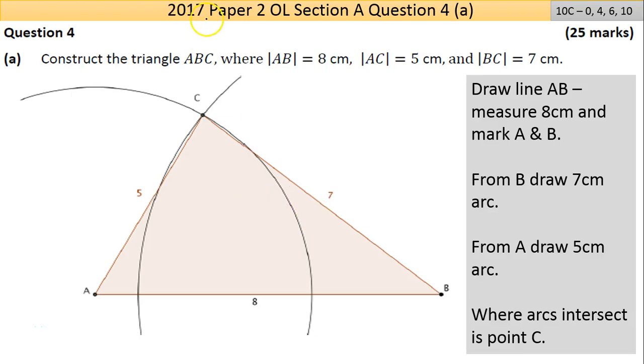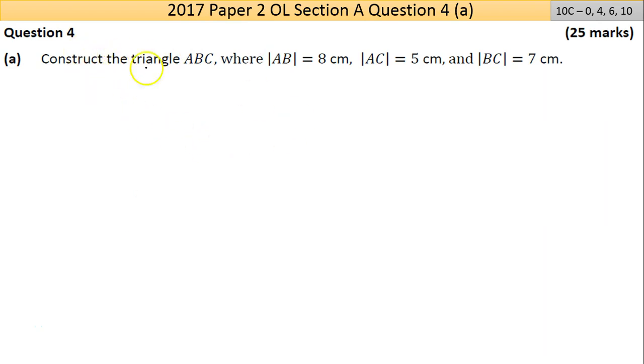Hi and welcome to 2017 Paper 2, Ordinary Level Maths, Question 4. Going back to the blank page, we're looking at construction. Construct triangle ABC where the length of AB equals 8 centimeters, AC equals 5, and BC equals 7.